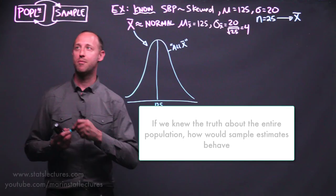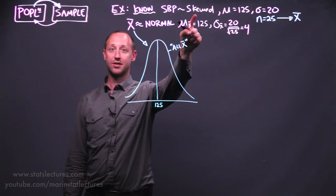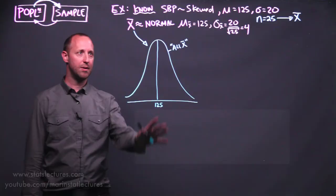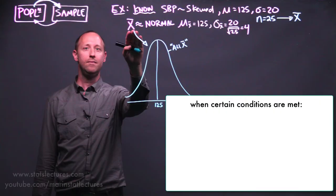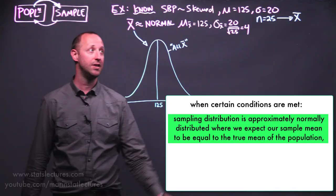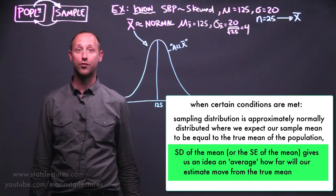Previously, we were learning about how, if we knew the truth for an entire population, sample estimates behave. We had this example: suppose that we know the systolic blood pressure in a population has a skewed distribution with a mean of 125 and a standard deviation of 20. We take a sample of 25 from this population and calculate the sample mean. We learned to think about the sampling distribution, which describes all the possible estimates we could have ended up with. When certain conditions are met, the sample mean is approximately normally distributed, where we expect our sample mean to equal the true population mean. The standard deviation of the mean — what we call the standard error of the mean — gives us an idea of how far, on average, our estimate will move from the true mean. We worked this out to be four.